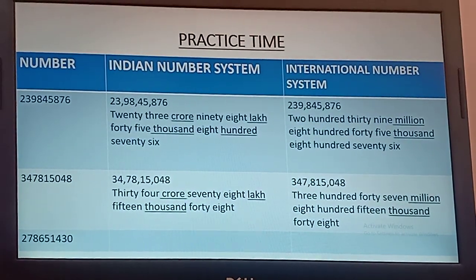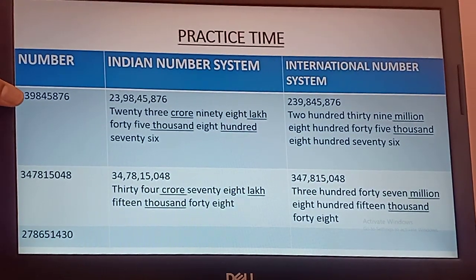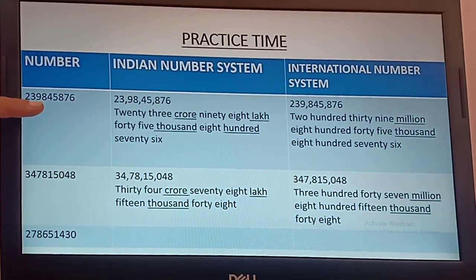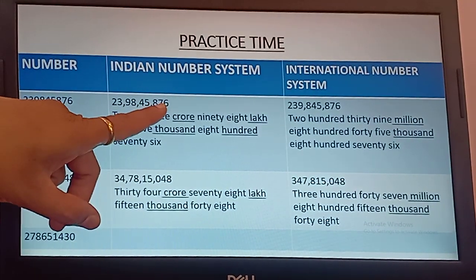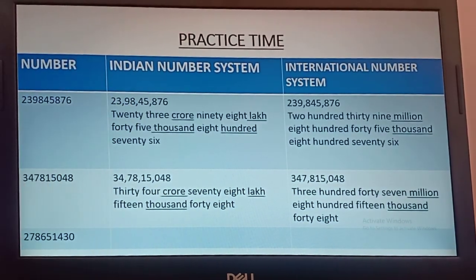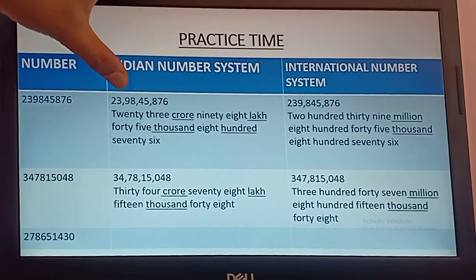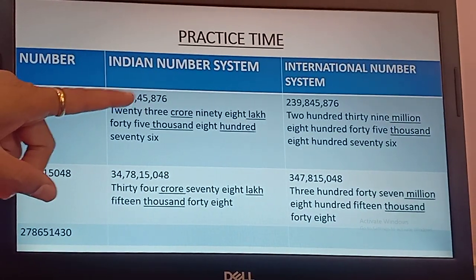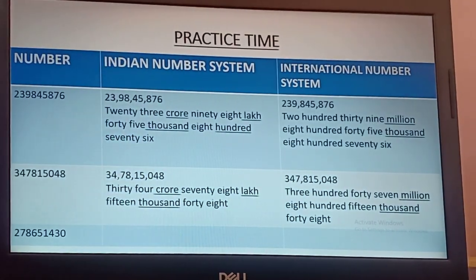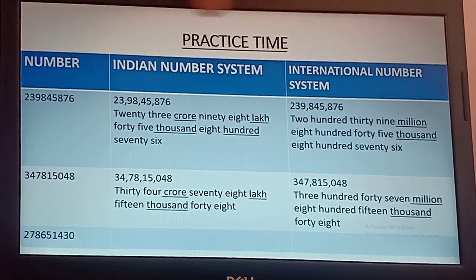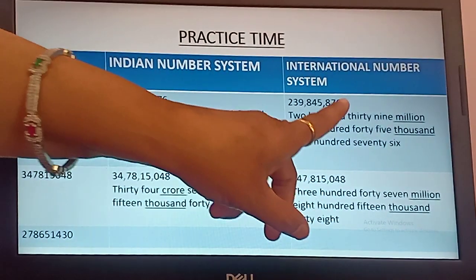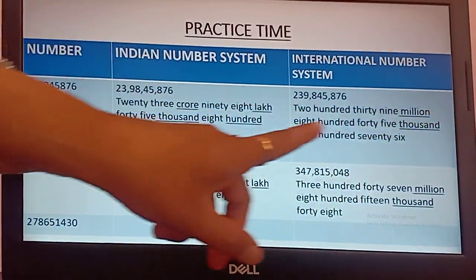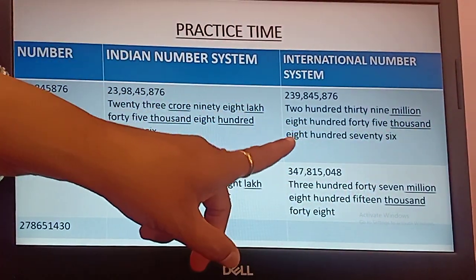Now more practice. We practice some more digits — how to write in Indian number system and in international number system. Here is the number. We split it according to Indian number system: ones group 3 digits, then 2 digits, 2 digits, 2 digits — ones group, thousands group, lakh group, crore group. The number reads: 23,09,845,876. In international number system, we split in groups of 3, 3, 3: ones group, thousands group, millions group — 239,845,876.